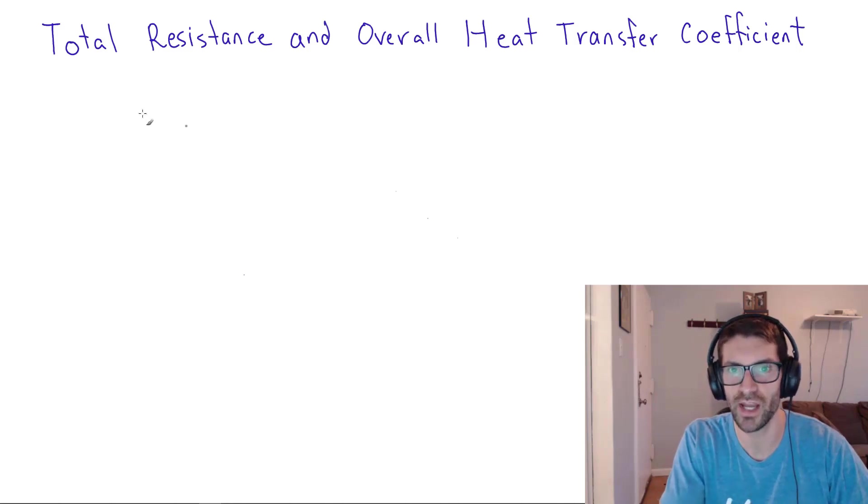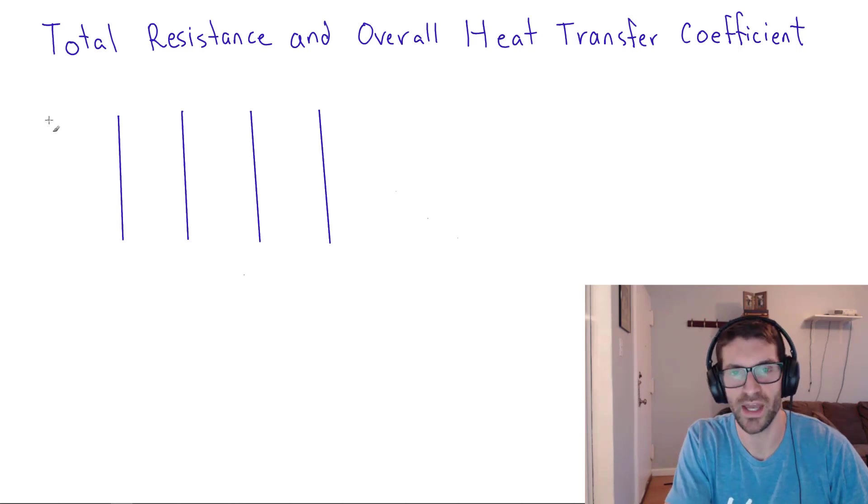So let's just draw a kind of generic situation so we have something to talk through. The overall principle is that you have some temperature on one side, which is different from the temperature on the other side. So there's a gradient, a thermal gradient.